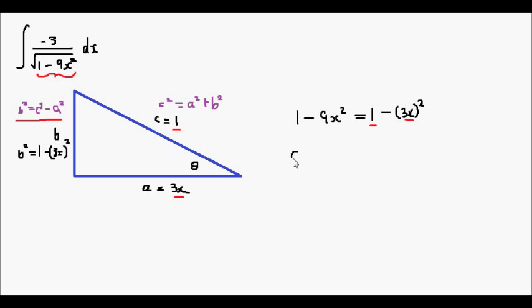From my trig laws, I know that cosine θ equals the adjacent side a over the hypotenuse c, which equals 3x divided by 1, which is 3x. So that implies that x equals 1 third of the cos of θ.